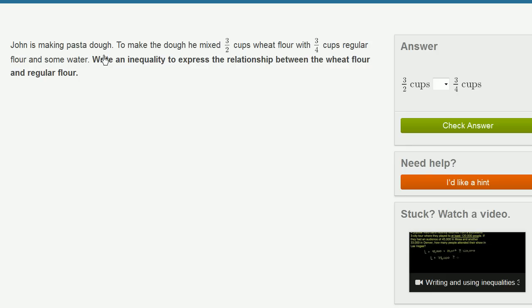John is making pasta dough. To make the dough, he mixed 3 halves cups wheat flour with 3 fourths cups regular flour and some water. Write an inequality to express the relationship between the wheat flour and the regular flour.